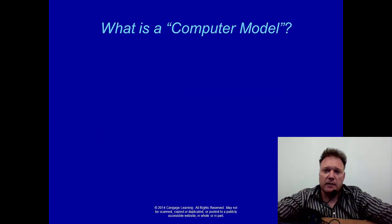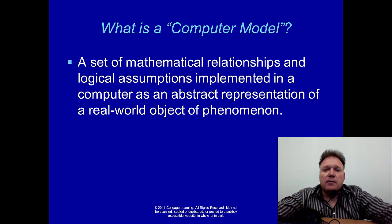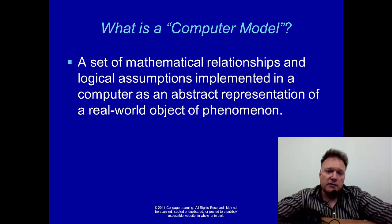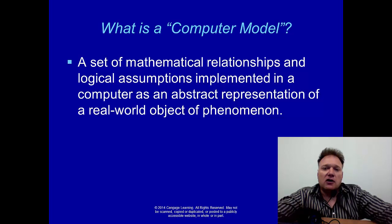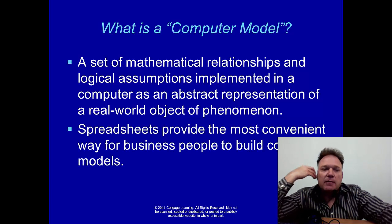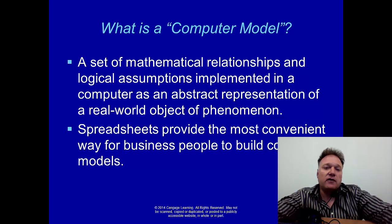What is a computer model? That's what we're going to be building all through this textbook. A computer model is a set of mathematical relationships and logical assumptions implemented in a computer as an abstract representation of a real-world object or phenomenon. We will be modeling these relationships and logical assumptions around some kind of real-life problem. Usually we're focused on a problem — and opportunities are also considered problems. That's how we view them.